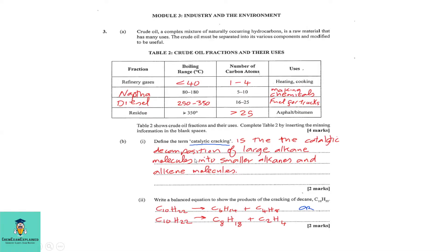Part b, question one: Define the term catalytic cracking. Catalytic cracking is the decomposition — using a catalyst — of large alkane molecules into smaller alkanes and alkene molecules.